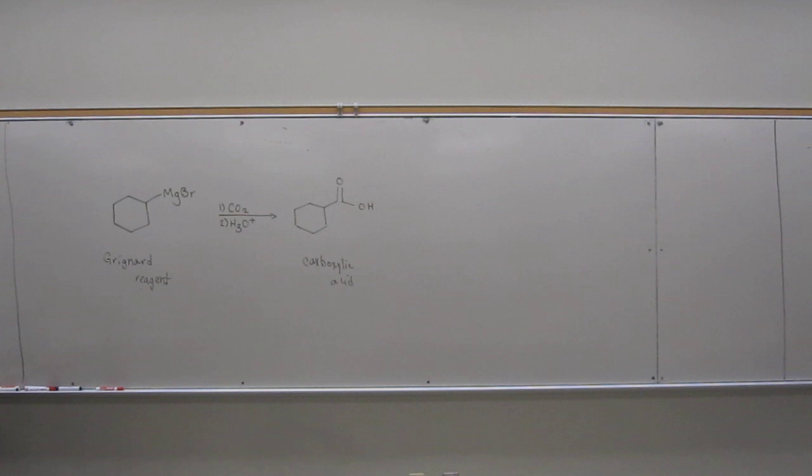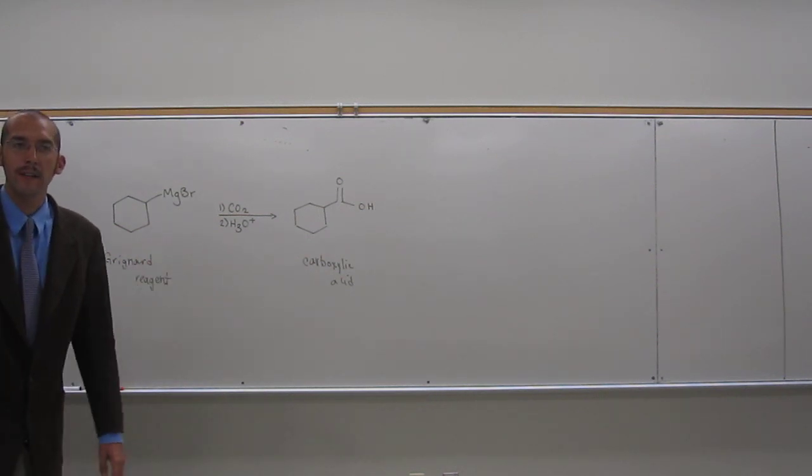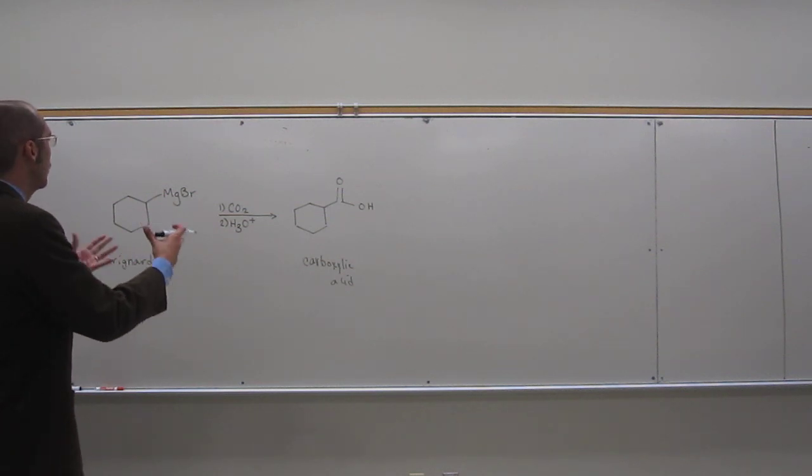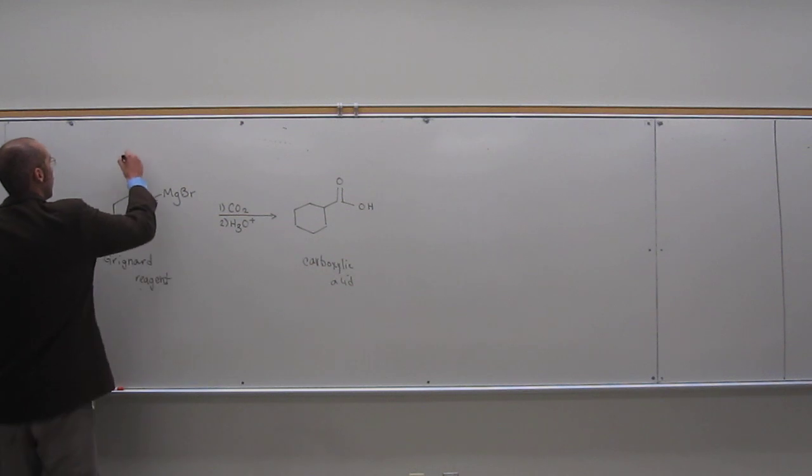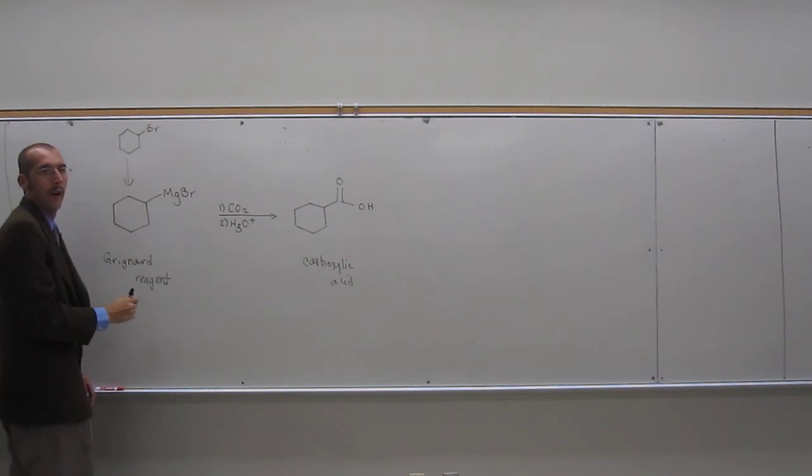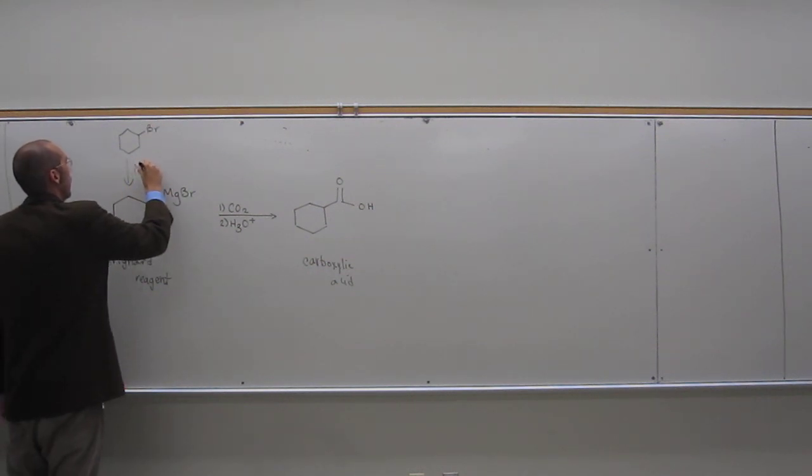OK, so this is taking a Grignard reagent to a carboxylic acid. It's a pretty useful reaction, so you can install—you have to begin with here an alkyl bromide, right, that you added magnesium and diethyl ether to.